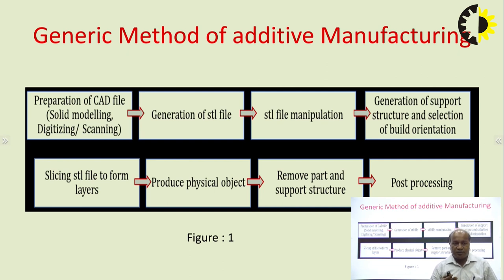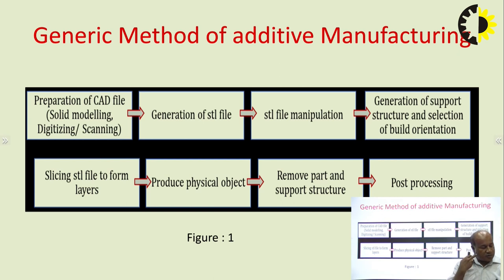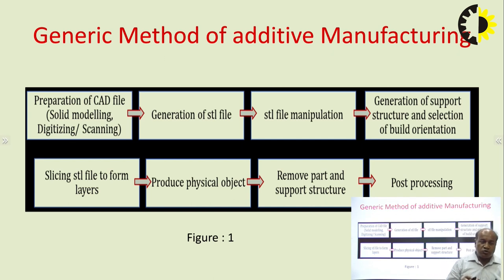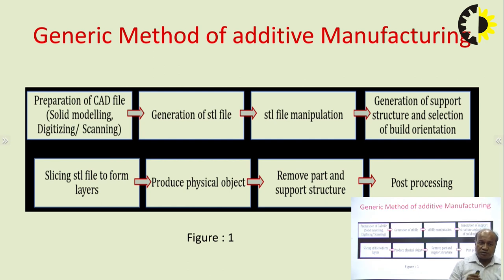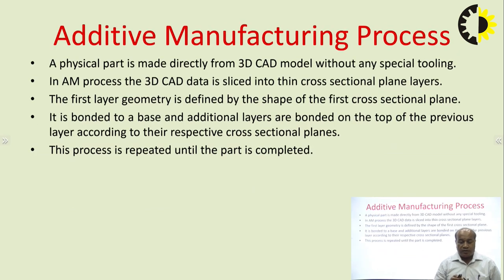Once the part is sliced into different layers, we print it — we upload the final sliced file to manufacture the part. After slicing, the system automatically generates G-code for manufacturing and actual part production. This G-code is used by the 3D printer to create the final physical object layer by layer. After the part is created, we remove the support structure if one was generated, and then perform post-processing finishing operations.